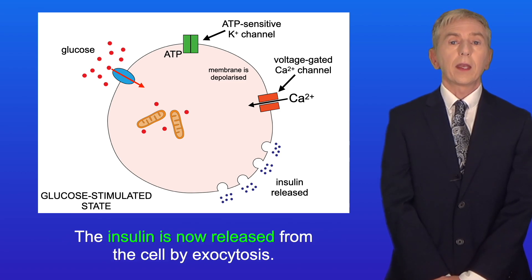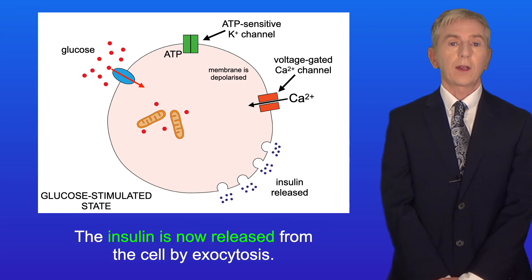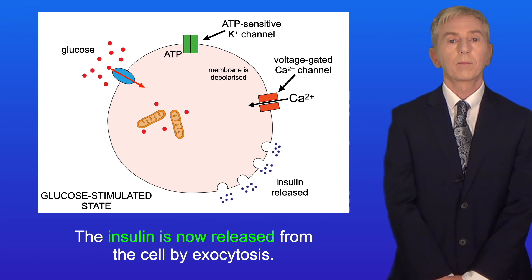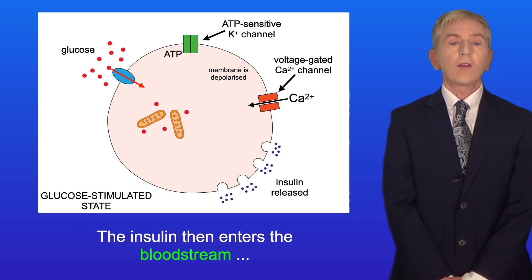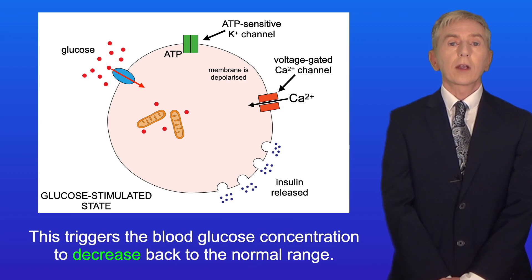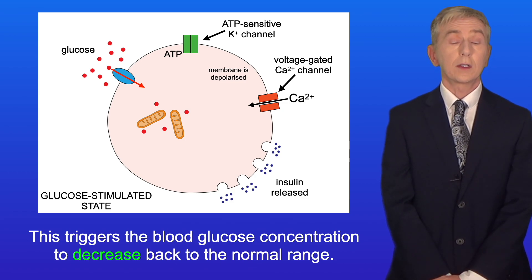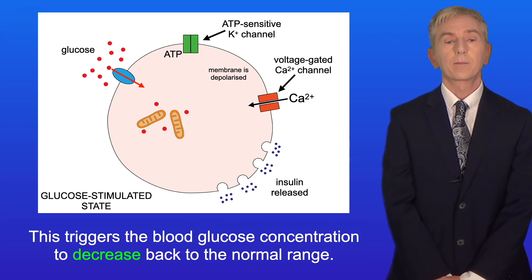The insulin is now released from the cell by exocytosis. The insulin then enters the bloodstream and travels around the body, triggering the blood glucose concentration to decrease back to the normal range.